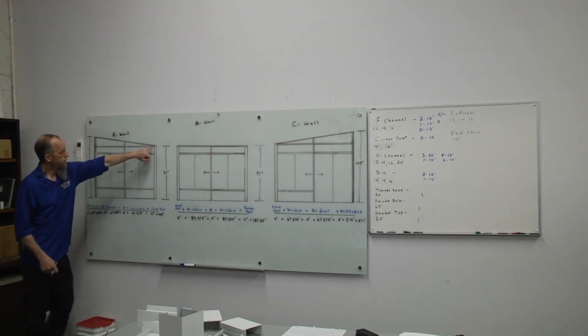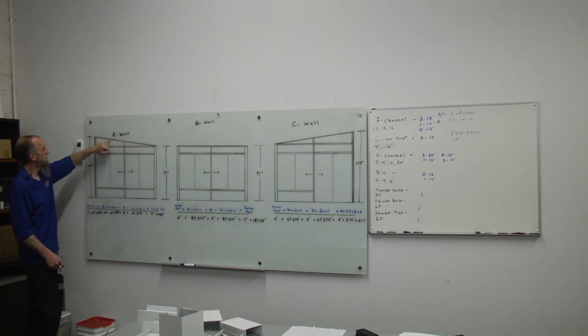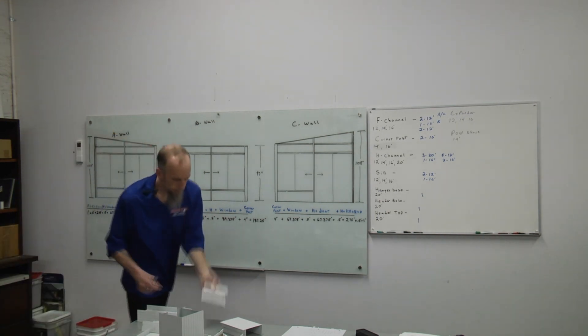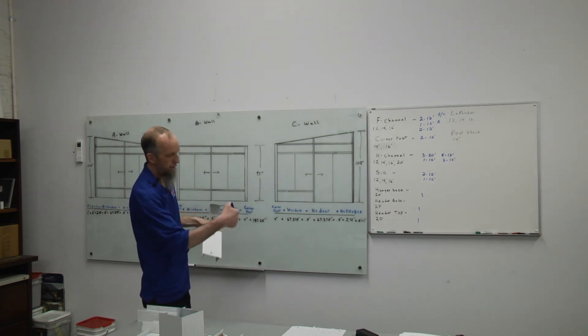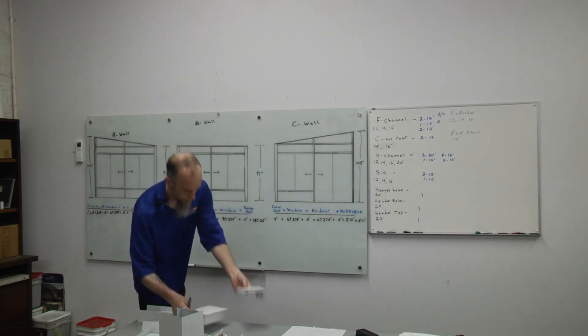On A and C wall on top of our wing panel or wing glass, this piece here we can use a post sleeve cap or we can use the expander. Either one.